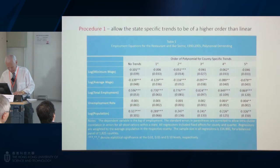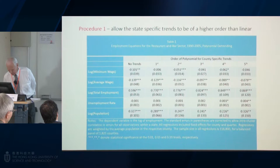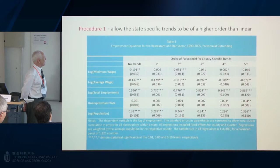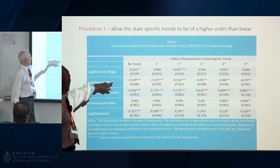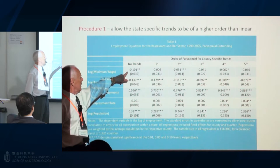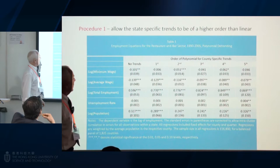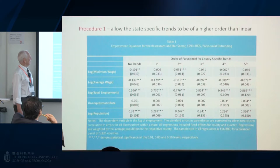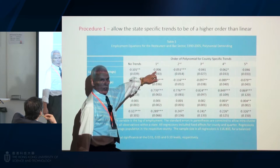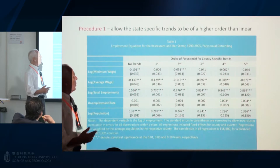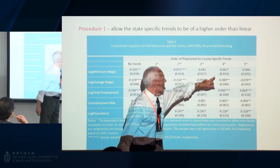According to David and colleagues, what we've got to do is basically allow the state specific trends to be of a higher order than linear. This is basically what happens when we use higher order terms in the last four columns: first we run the model with no trends — we have a significantly negative effect with no county specific trend variable. When we basically introduce the linear trend, the significance disappears. And when we introduce the higher order terms, we do actually find two significant coefficient estimates, which is rather interesting.